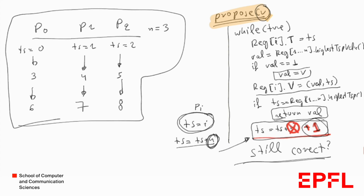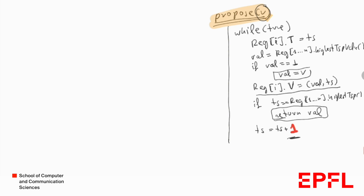How can we find an example where this modification leads to a violation of some properties of obstruction-free consensus? The key insight is that plus n was needed to give different timestamps to different processes. With plus 1, it's possible that different processes have the same timestamp. If this is the case, then both processes might simultaneously have the highest timestamp and return different values, potentially violating agreement.